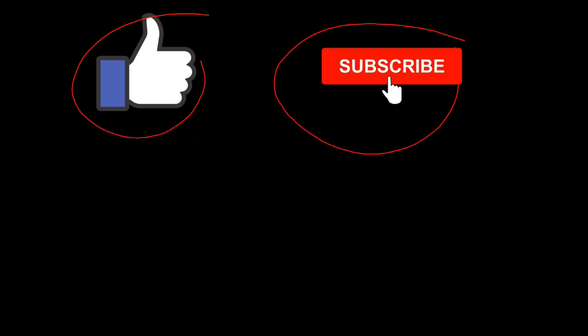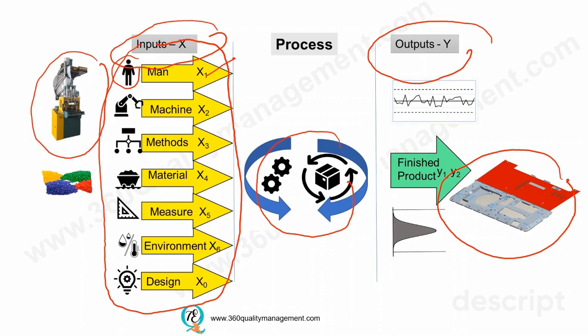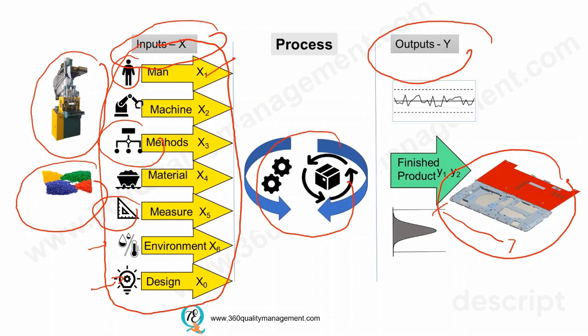The machine should be well maintained. The methods — the work instruction that is used — should be easy to understand and follow. The materials — the plastic pellets that are used — should be from a well-qualified, approved vendor with a good supplier quality management system. The measurement process will measure some of the key dimensions of the laptop chassis. Environment is important for products that could be sensitive to certain environmental factors such as moisture, which needs to be controlled during the molding process and the pellets need to be dry. Product design is also one of the process inputs, which is very important in impacting the process output, and this will be discussed in another video.